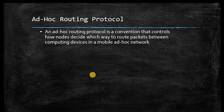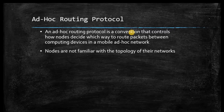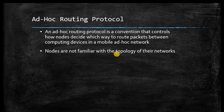The ad-hoc routing protocol, like a normal routing protocol, finds a path to send data from one node to another, from source to destination. The purpose of the routing protocol is path finding. Nodes inside a MANET are not familiar with the topology of their network because the topology changes frequently.